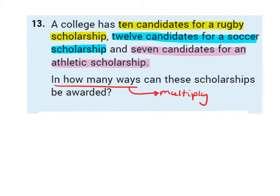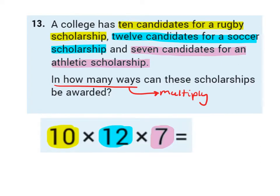When we hear the phrase 'in how many ways,' we want to think multiply. So there are 10 candidates for rugby, 12 for soccer, and 7 for athletic. We're going to multiply 10 by 12 by 7, and the answer is 840 ways that these scholarships can be awarded.